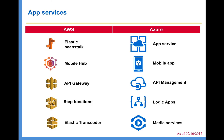When it comes to App Services, AWS has Elastic Beanstalk and Azure has App Services, where you can deploy web apps and API apps. In terms of comparison, I find App Services much more sophisticated when compared to Elastic Beanstalk.